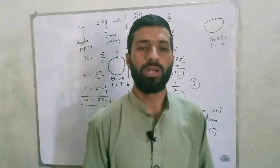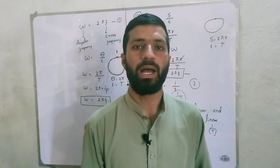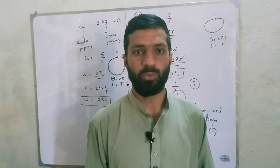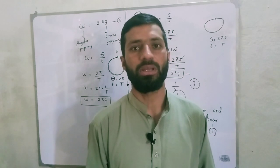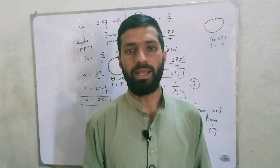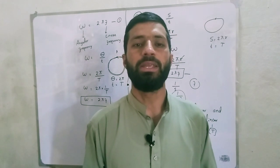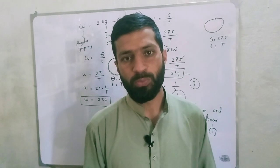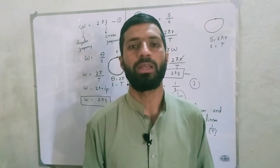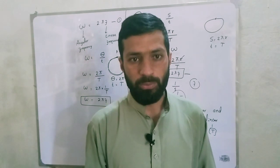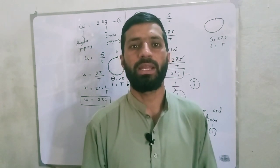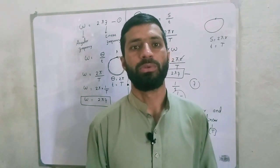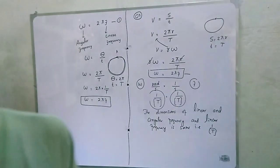In today's video, we proved how omega is equal to 2 pi f by two methods — one from the linear equation and one from the angular equation. We also proved that the dimension of linear frequency and angular frequency are the same, and that the equation omega equals 2 pi f follows the principle of homogeneity. If you liked the video, please subscribe to our channel. Thank you for watching.